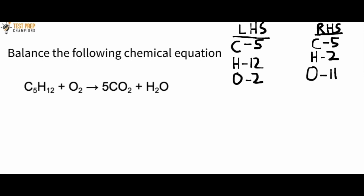When balancing, the most important thing to know is what you can and cannot change. The numbers out front are called coefficients, and if we don't see a coefficient, we say it's 1 — so H2O and O2 each have a coefficient of 1. These coefficients we can change. But the little numbers called subscripts we cannot change. It's the numbers out front that you want to change when balancing.